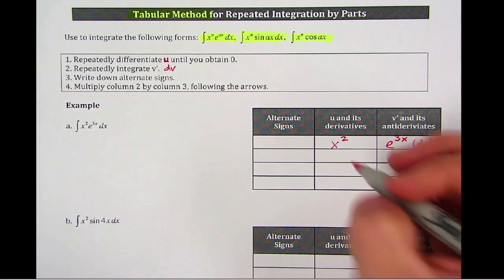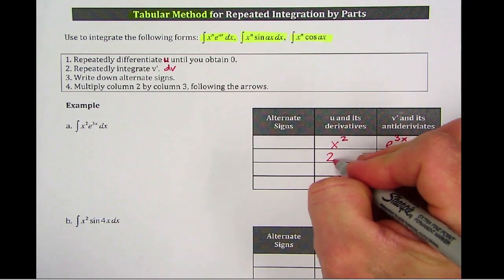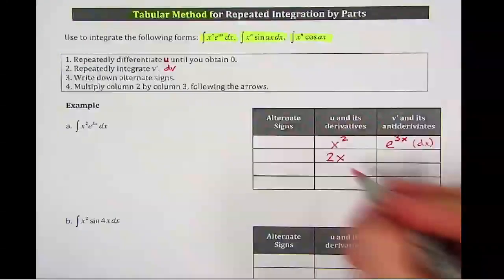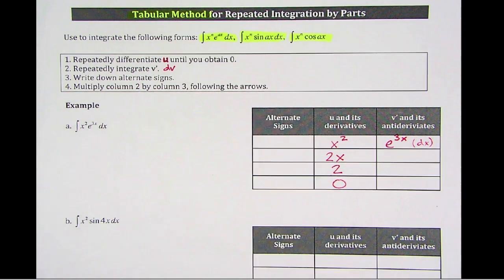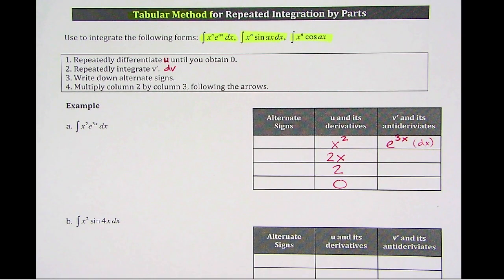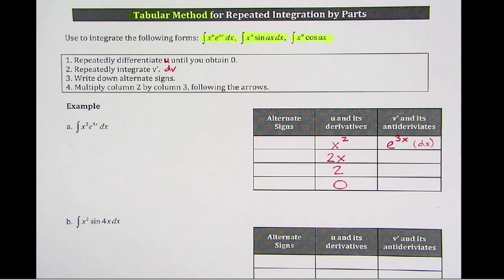So first thing you want to do is look in this column and find all the derivatives of u down to 0. So x squared, derivative is 2x, derivative of 2x is 2, derivative of 2 is 0. And since this is pre-planned, the boxes fit perfectly. It's not going to happen like that, obviously, in your assignment.